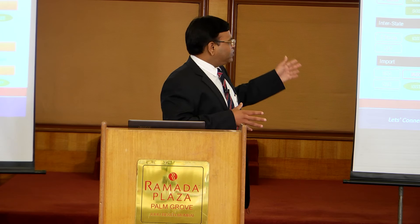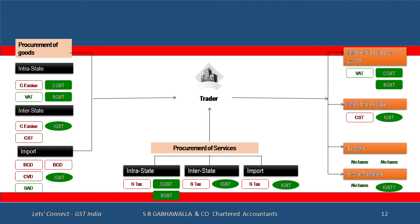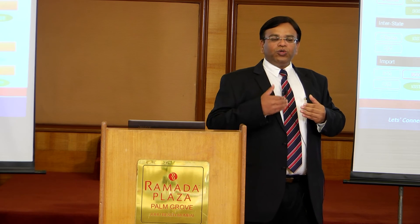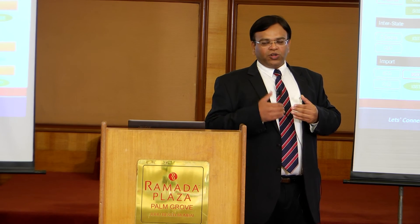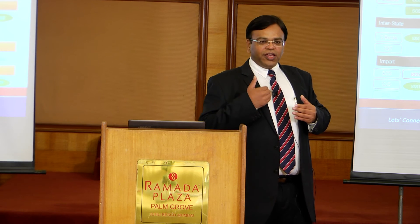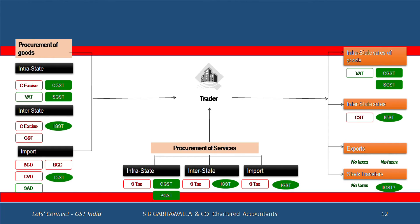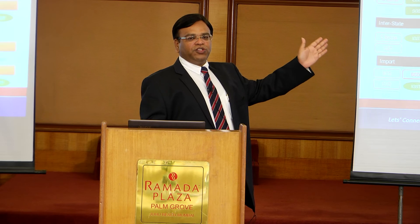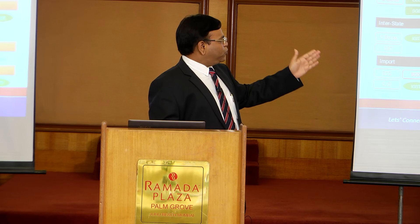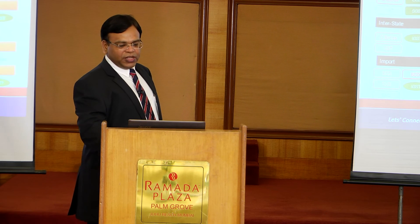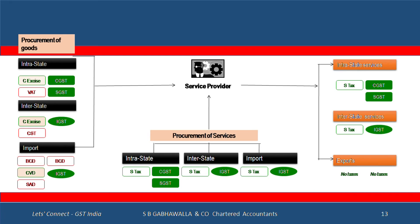Over and above the rate reduction, you have a credit benefit, so there will have to be a substantial reduction in prices — whether it happens will depend on how strong the buyer is in negotiating. On the sales side, a trader today charging VAT will now have to charge CGST as well as SGST — he will have to register with the central authorities. Interstate, instead of CST you have IGST, and the challenge of C-form collection goes away. Exports remain tax-free; stock transfers face the IGST applicability debate.